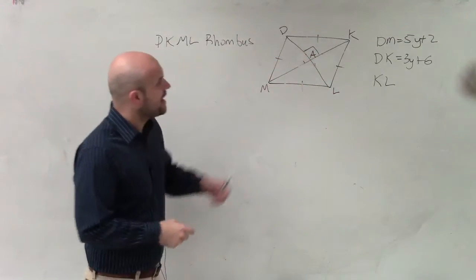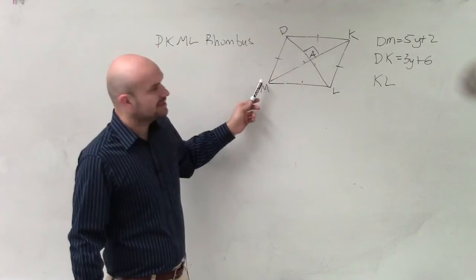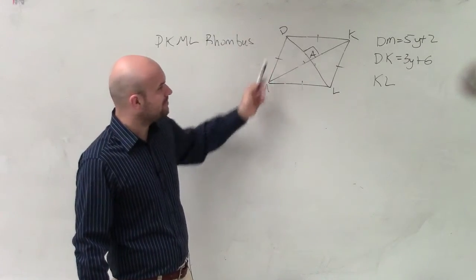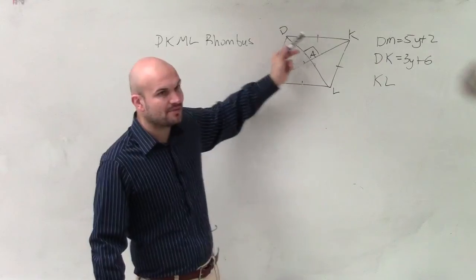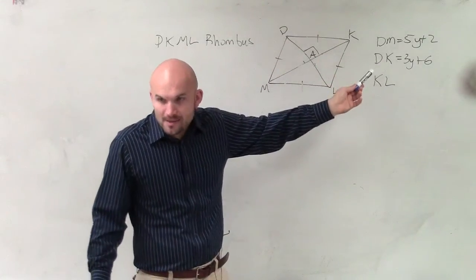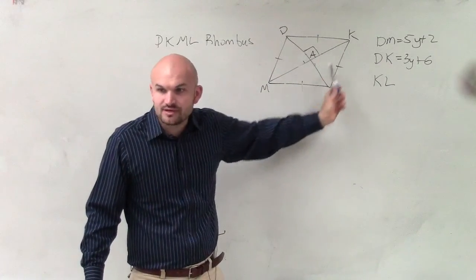So guys, right now, I know it says that DM is 5y plus 2, and DK is 3y plus 6. Well, if it's a rhombus, then, Ashley, we know that both sides are equal to each other, correct?